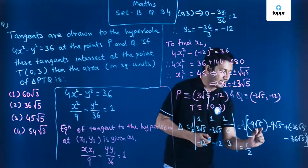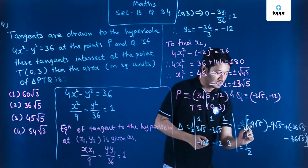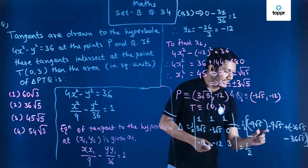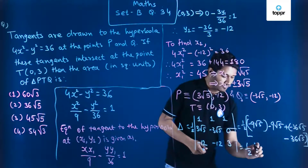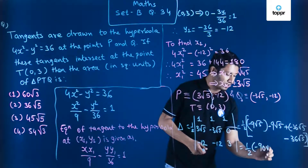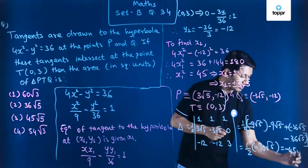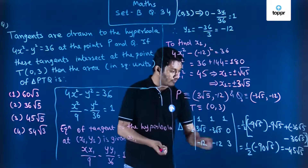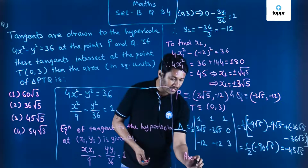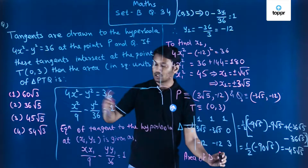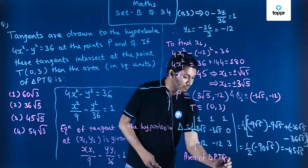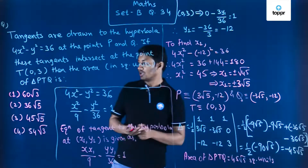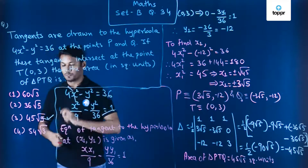Every number has √5 as a common factor. Adding up all the values: 9 plus 9 is 18, plus 36 plus 36 gives a total of 90, so we get minus 90√5. Multiplying by half gives minus 45√5. Since area cannot be negative, we discard the minus sign. The area of triangle PTQ is 45√5 square units, which is option number 3.